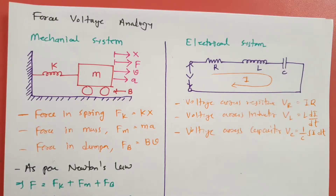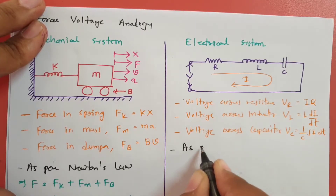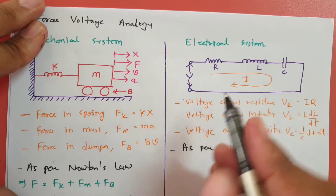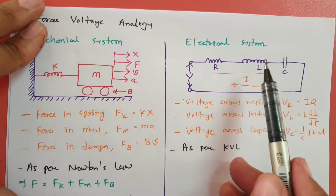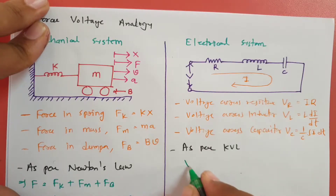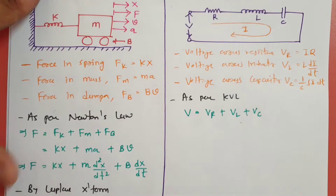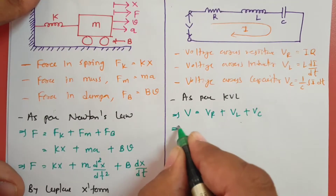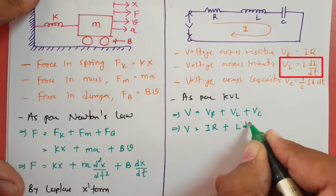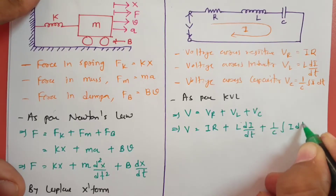To find the resultant voltage equation, we apply KVL. As per KVL: V = V_R + V_L + V_C. Substituting: V = I×R + L×(di/dt) + (1/C)×∫I dt.